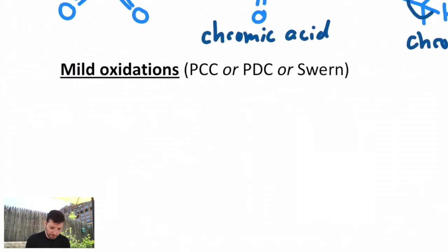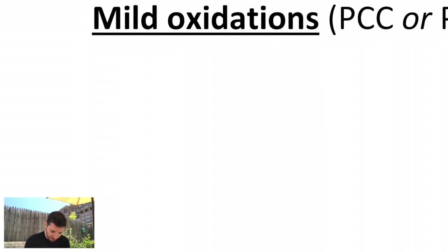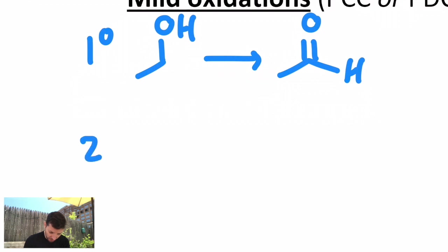So I want to show you a couple of different examples of reagents that do this. And I broke them down into mild oxidations and then strong oxidations. Mild oxidations will take things like a primary alcohol, such as ethanol, and convert them into aldehydes.